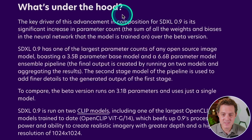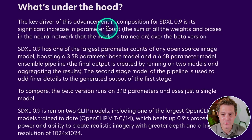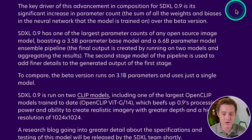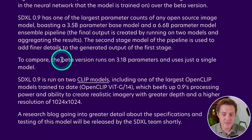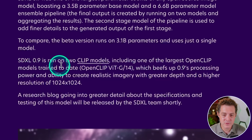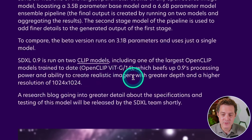The key driver of this advancement in composition for SDXL 0.9 is its significant increase in parameter count over the beta. SDXL 0.9 has one of the largest parameter counts of any open source image model, boasting a 3.5 billion parameter base model and a 6.6 billion parameter ensemble pipeline. The beta has 3.1 billion parameters and uses just a single model. SDXL uses two CLIP models, including one of the largest open CLIP models trained to date, giving upgraded realistic imagery, greater depth, and resolution up to 1024 by 1024.